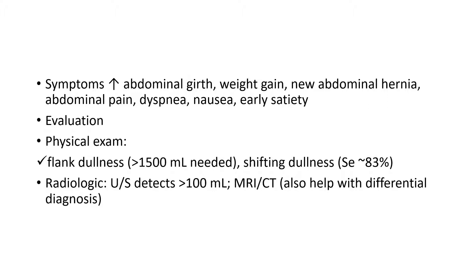Evaluation includes history and physical examination. Flank dullness occurs when there is 1500 ml or more of ascitic fluid, and shifting dullness occurs with greater fluid collection, with a sensitivity of 83 percent. Radiologically, ultrasound can detect as little as 100 ml of ascitic fluid; MRI and CT scan of the abdomen may also help diagnose other causes.